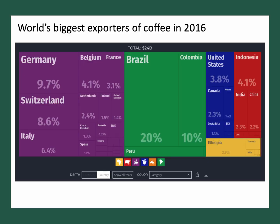This tree map shows the share of countries that export coffee. With total coffee exports of $24 billion in 2016, the world's biggest coffee exporter is Brazil with a fifth of that total. Colombia has 10%, and Germany, Switzerland, and Italy also feature — typically exporting roasted, refined products with brand names. Coffee is also important for Indonesia, Ethiopia, and Tanzania.